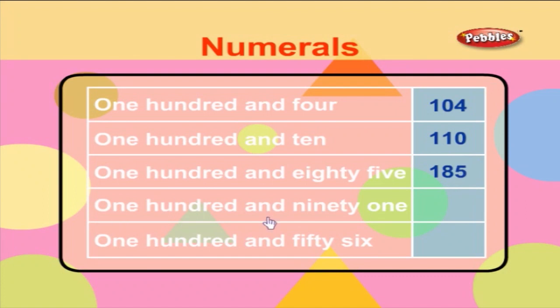One hundred and ninety-one. For this, we write the numeral as one, nine, one. One hundred and fifty-six. For this, we write the numeral as one, five, six.